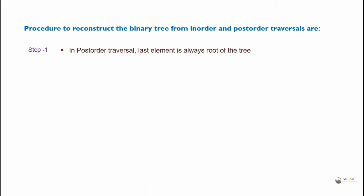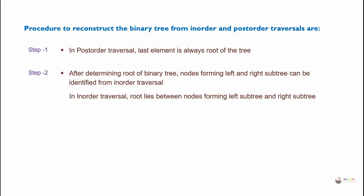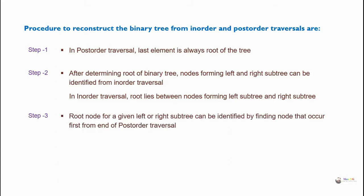In post-order traversal, the last element is always the root of the tree. After determining the root, nodes forming the left and right subtree can be identified from in-order traversal. In in-order traversal, the root lies between nodes forming the left subtree and right subtree. The root node for a given left or right subtree can be identified by finding the node that occurs first from the end of post-order traversal. Repeat these steps until the complete binary tree is constructed.